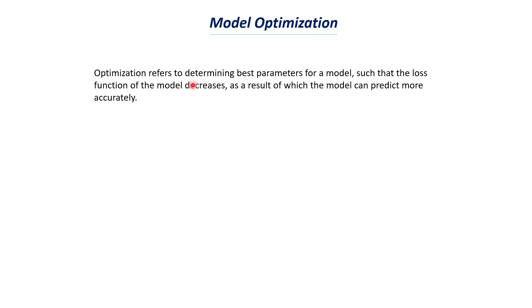First, let's understand what is meant by model optimization. Optimization refers to determining the best parameters for a model such that the loss function of the model decreases, as a result of which the model can predict more accurately. Loss function is a measure that tells us how far the predicted value and the actual value are. It is the difference between the predicted values and the true values. If the loss function value is high, that means our model is not predicting correctly, so we should have a very low loss function value.